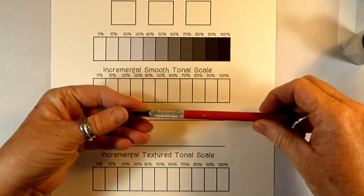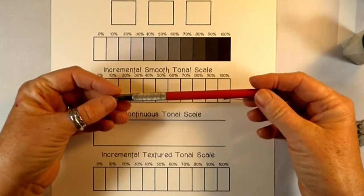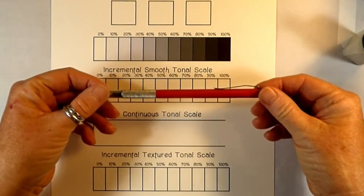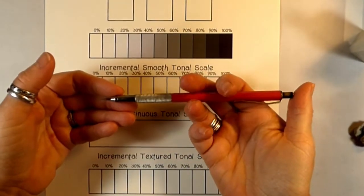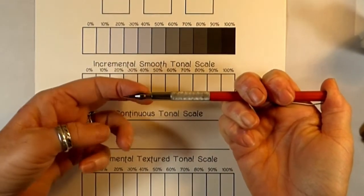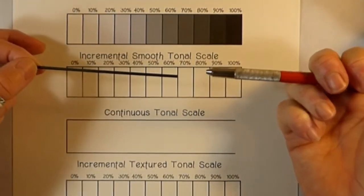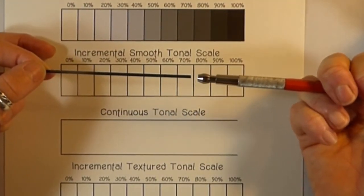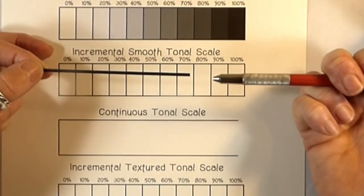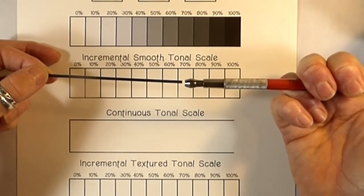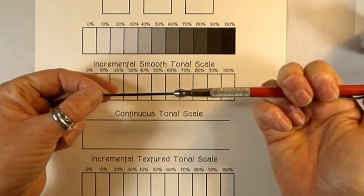They come with the holder, which costs around $10 to $15. By pushing the end of this, the clamp opens and the lead goes inside. You can get the leads in all the different hardnesses. Basically I'm just pushing this and it opens up, and I insert the lead.